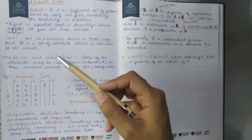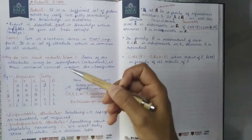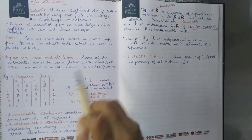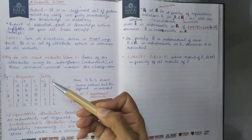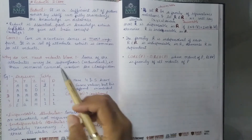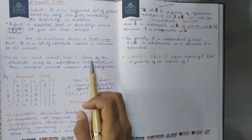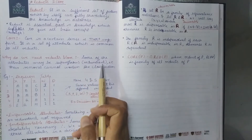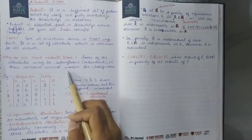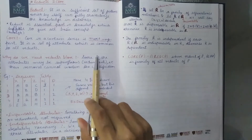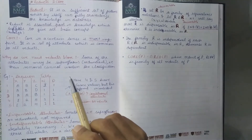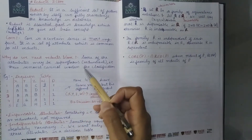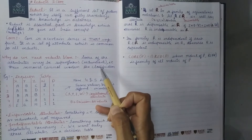Why do we need Reducts and Core? When we prepare a database, there are issues where we have redundant, repeated, or superfluous attributes. Some attributes are redundant or superfluous — superfluous means redundant. Their removal cannot worsen the classification. In our database, if we remove those redundant attributes, there will be no difference in classification.